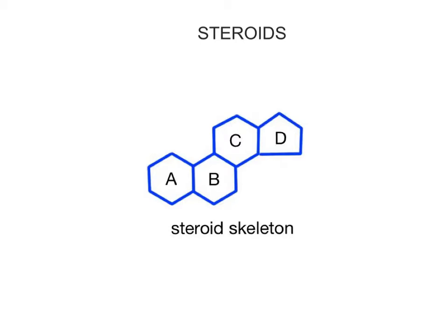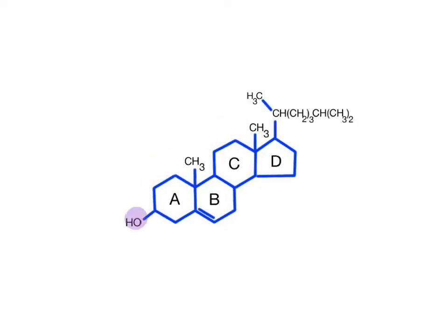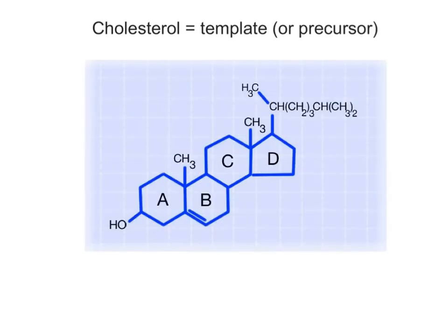Another important group of lipids are the steroids, which have a diverse range of functions and a different structure than the triglycerides and phospholipids. All steroids consist of a skeleton of four fused nonpolar rings made of carbon atoms, with a variety of different side groups attached to the rings giving them structural and functional diversity. Cholesterol, a steroid synthesized in the liver, consists of four fused carbon rings and a hydrocarbon tail.